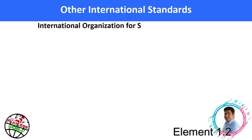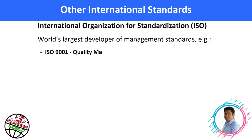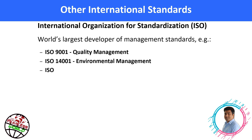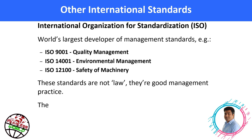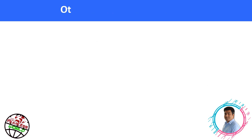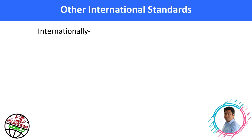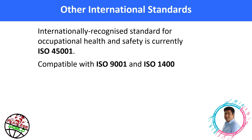Other international standards include those from the International Organization for Standardization (ISO), the world's largest developer of management standards. For example, ISO 9001 is for quality management, ISO 14001 is for environmental management, and ISO 12100 is for safety of machinery. These standards are not law; they are good management practice, and lead to a worldwide common approach to good management. The internationally recognized standard for occupational health and safety is currently ISO 45001, which is compatible with ISO 9001 and ISO 14001.